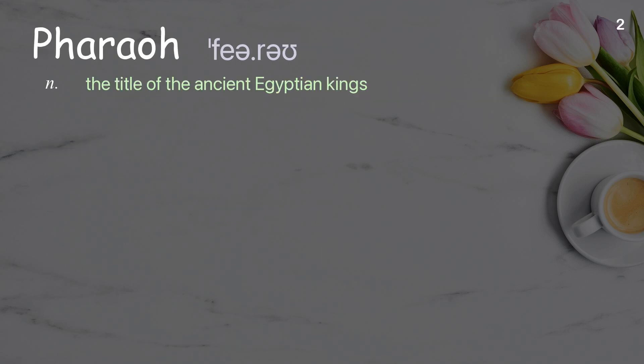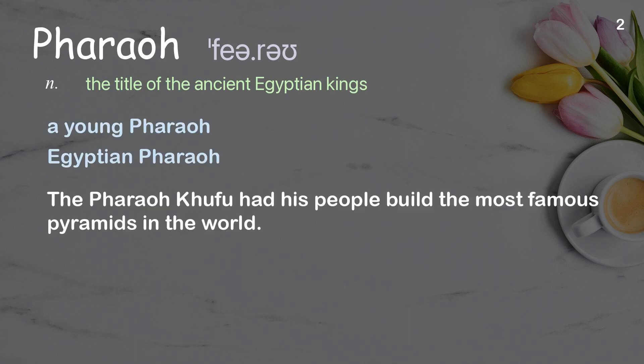Pharaoh: The title of the ancient Egyptian kings. Examples: A young pharaoh. Egyptian pharaoh. The pharaoh Khufu had his people build the most famous pyramids in the world.